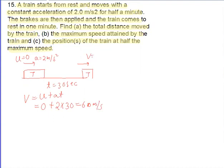At this point, velocity is 60 meter per second. Then brakes are applied and the final velocity of the train is again zero. The time required to reach zero velocity is 1 minute, that is 60 seconds.